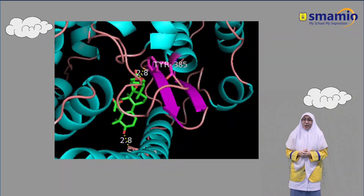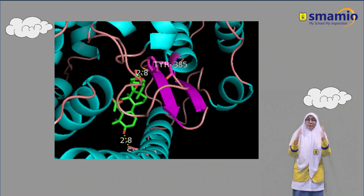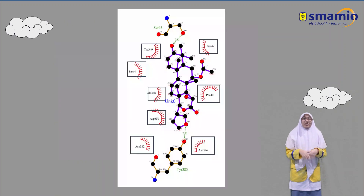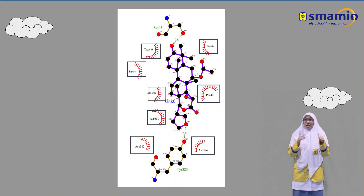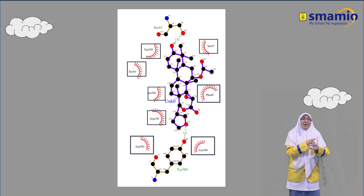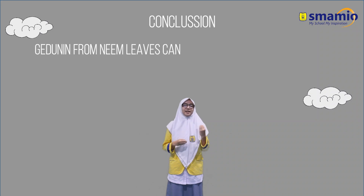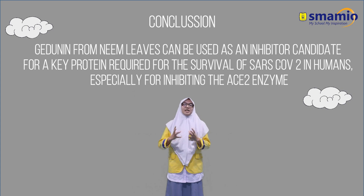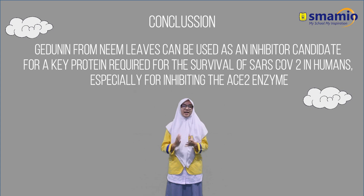The interaction of Gedunin with ACE2 produces 2 hydrogen bonds at serine-43 and tyrosine-385, and several hydrophobic interactions at serine-44, alanine-348, aspartate-350, phenylalanine-40, and asparagine-394. It is good news that Gedunin from neem leaves can be an inhibitor candidate for the key proteins required for the survival of SARS-CoV-2 in our body, especially for inhibiting the ACE2 enzyme, which is the entry point for SARS-CoV-2 in the human body.